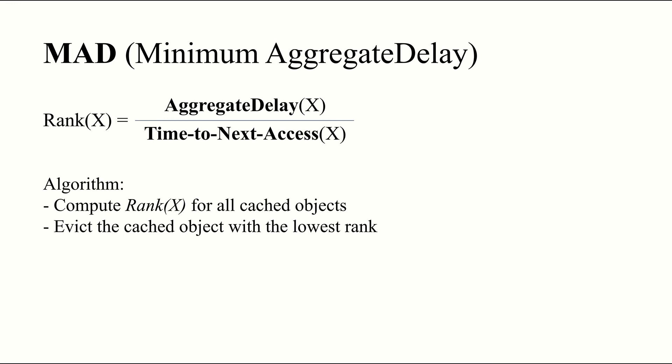Combining these observations, we have our heuristic. The algorithm itself is simple. In making an eviction decision, we compute the rank of an object, which I'll describe shortly, and evict the object with the lowest rank. Where the rank is defined as the ratio of aggregate delay to the time to the next access for this object. There's just one final snag. Both aggregate delay and the time to next access rely on future information, which we don't have access to in the online setting. Fortunately, as is standard in caching literature, we can use the past to make predictions of the future. Let's see what this looks like.